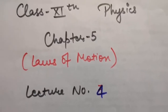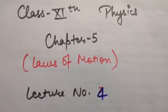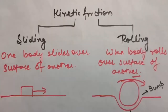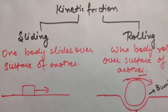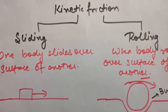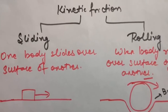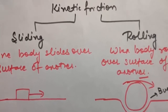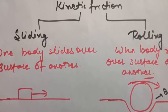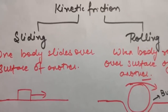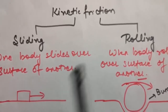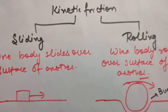Good morning students. This is class 11th physics, chapter number 5, lecture number 4. In the previous lecture we studied about friction and its two types: external friction and internal friction. We also studied the types of external friction: static friction, limiting friction, and kinetic friction. Today we will start with kinetic friction because it has two types.